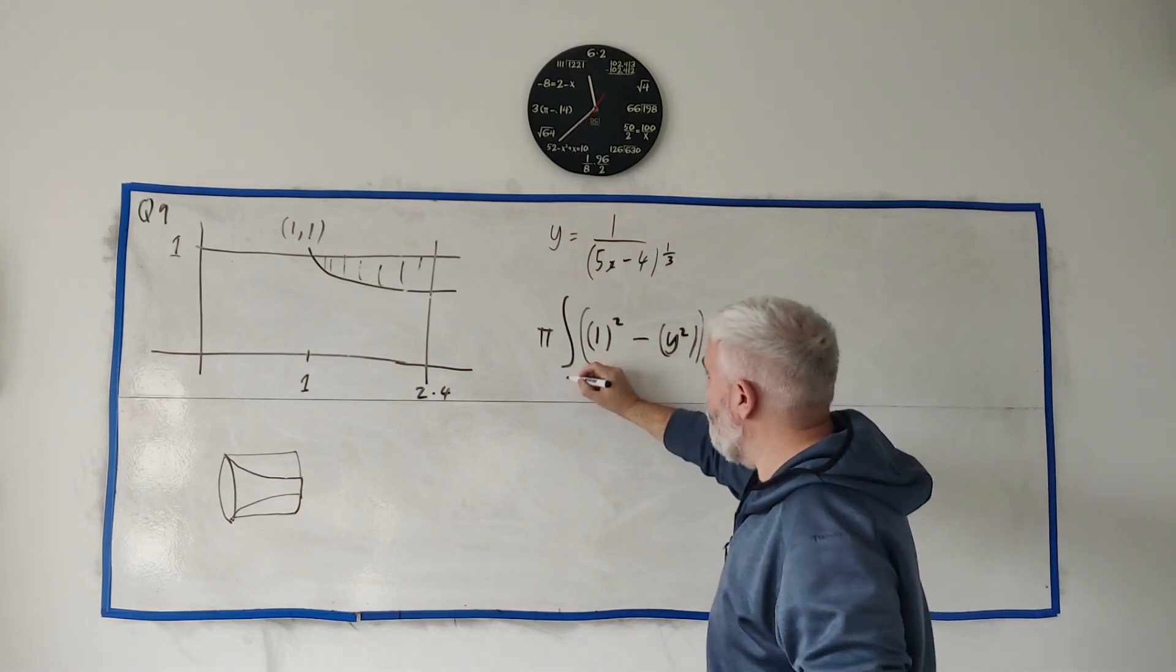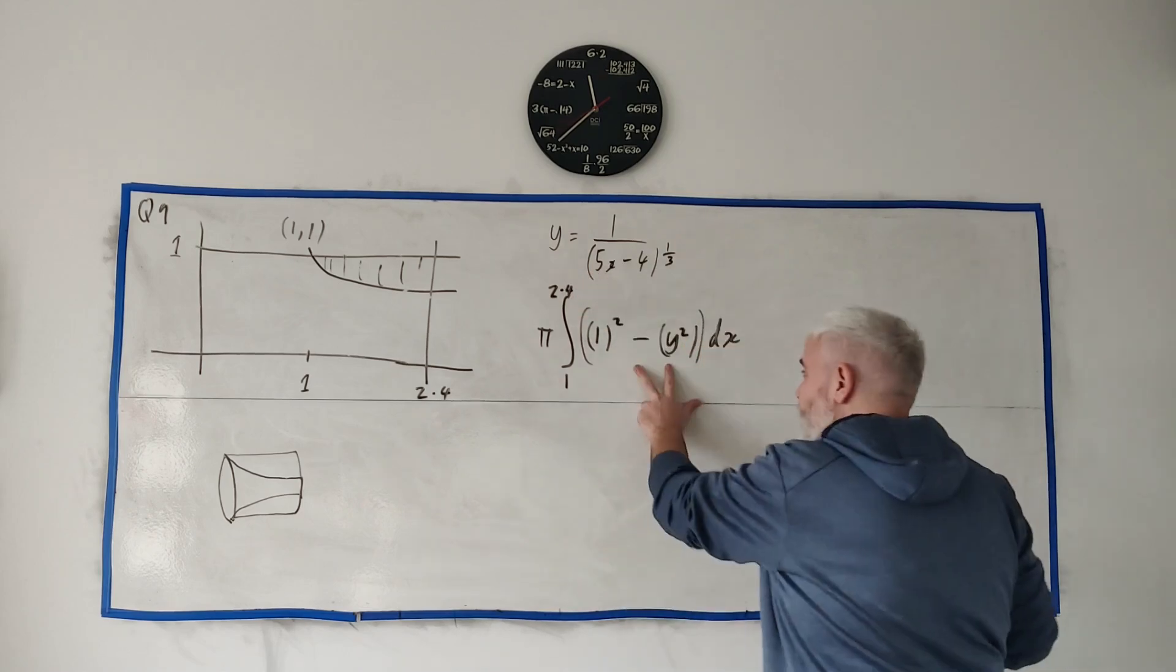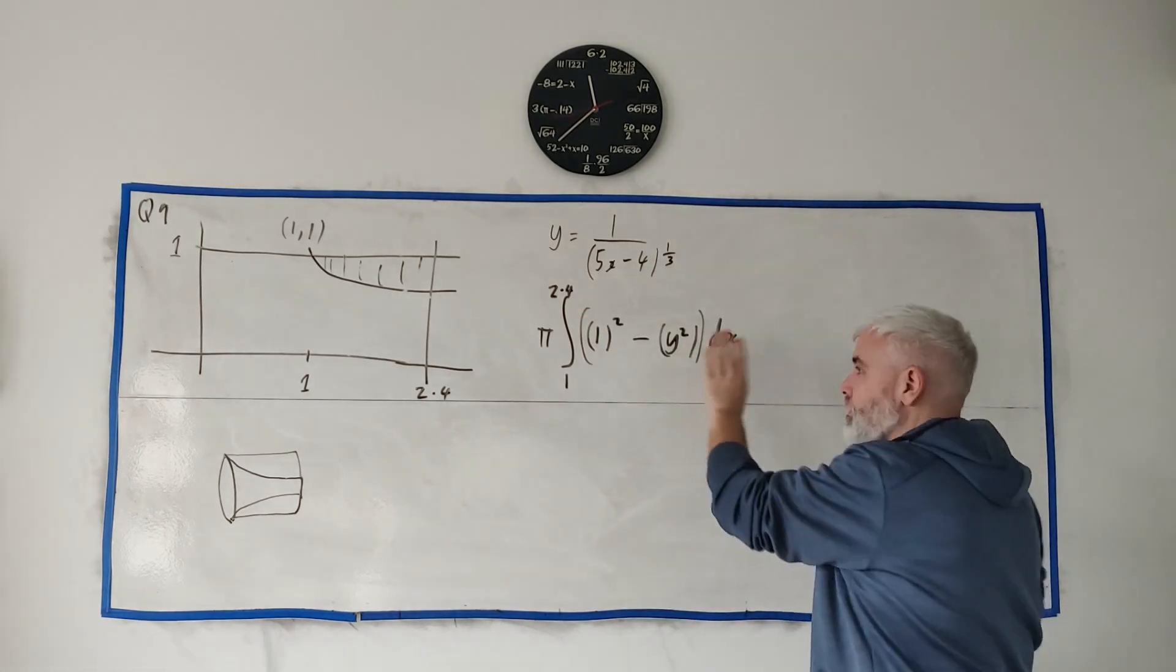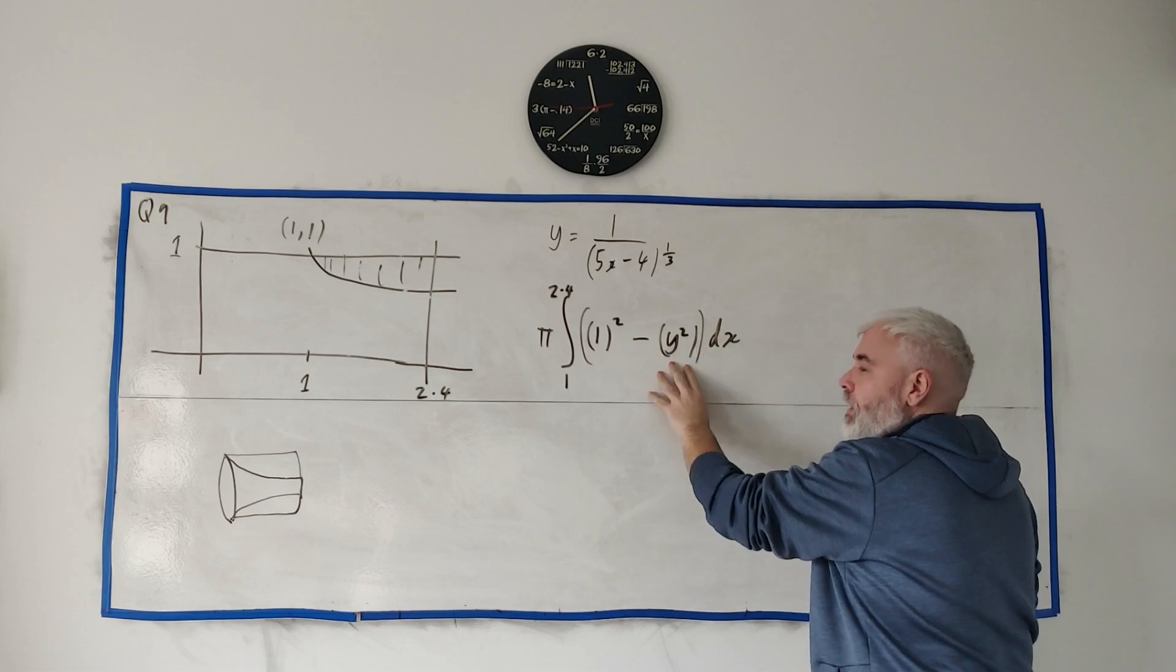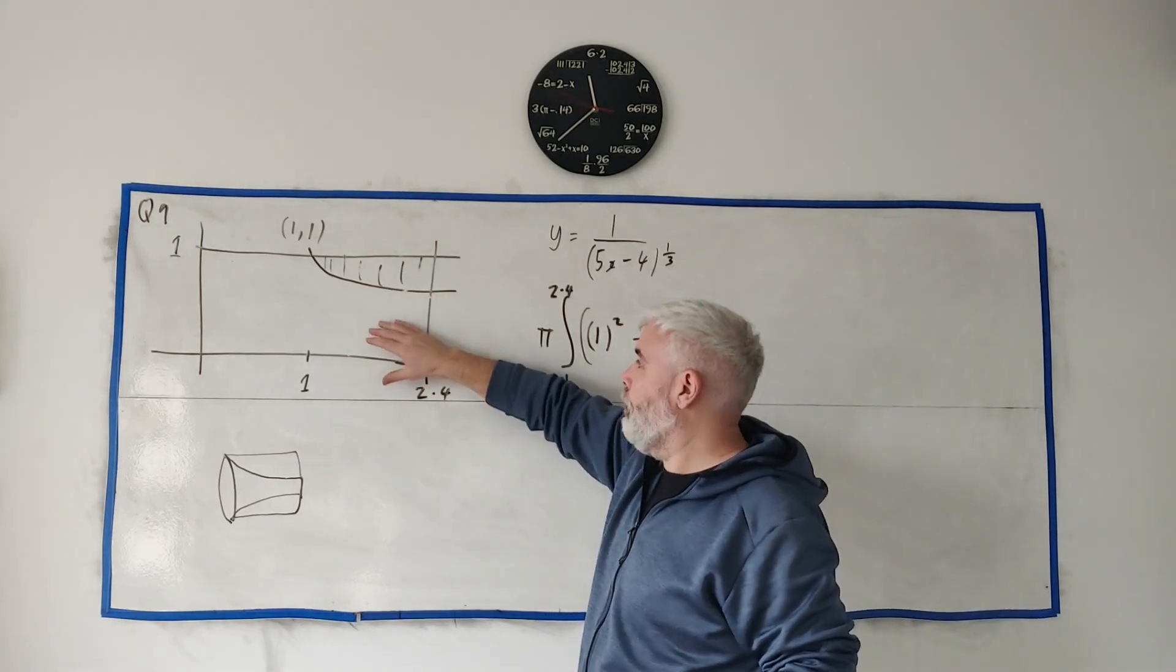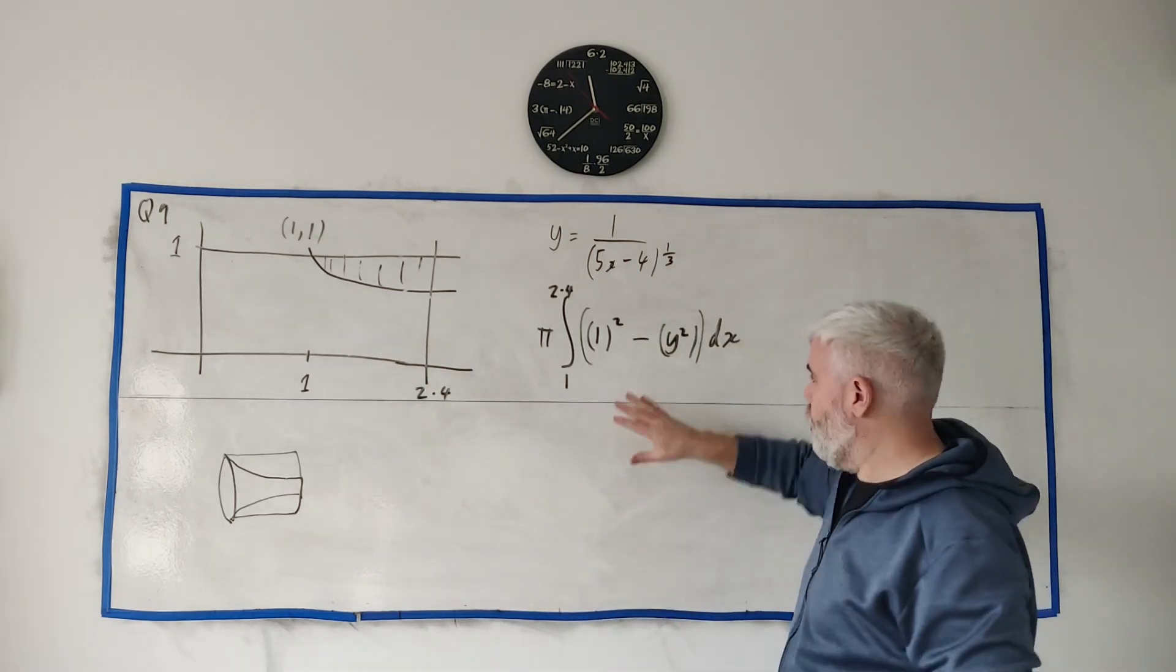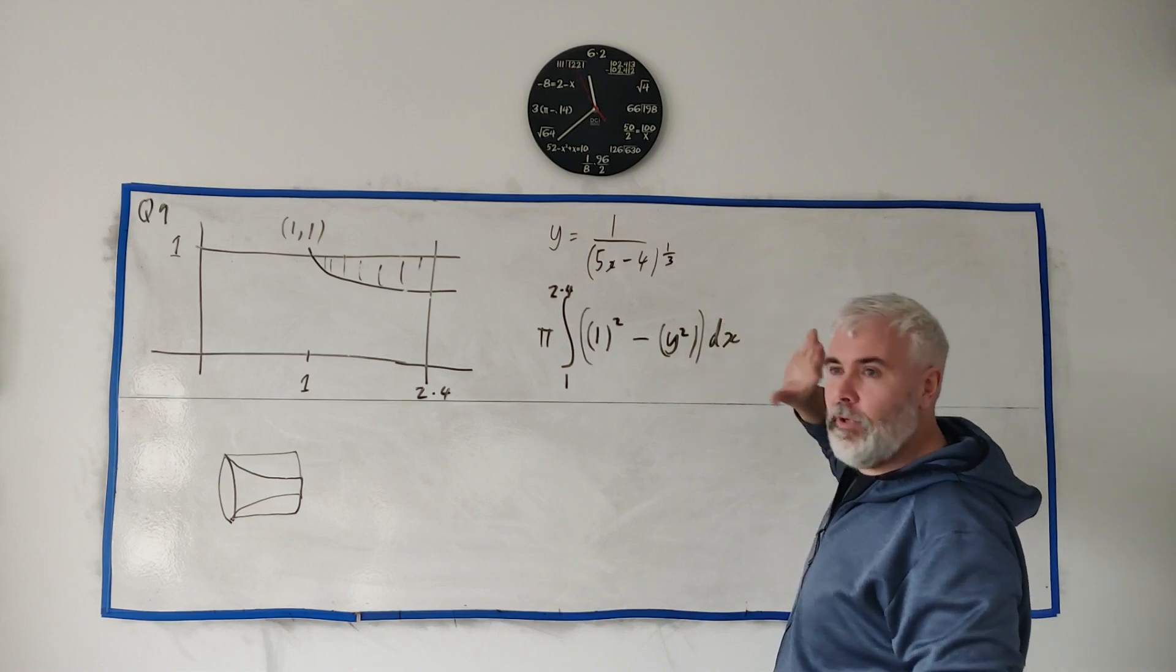And the bottom line here is just the y squared, and then you integrate all of that with dx between the points 1 and 2.4. This will give you the answer you're looking for. This is finished.